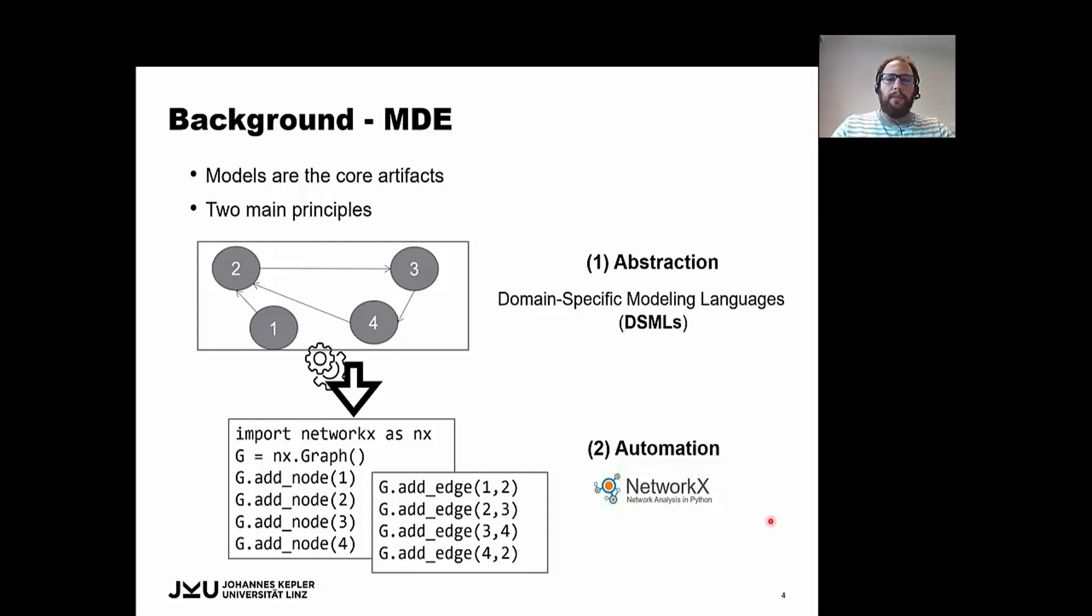And the second one is the automation, in which the code is generated from a model.